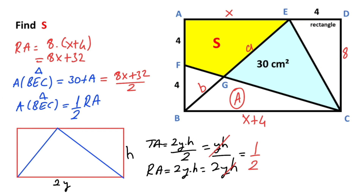That means capital A equals 4x minus 14. So let's write here: 4x minus 14.